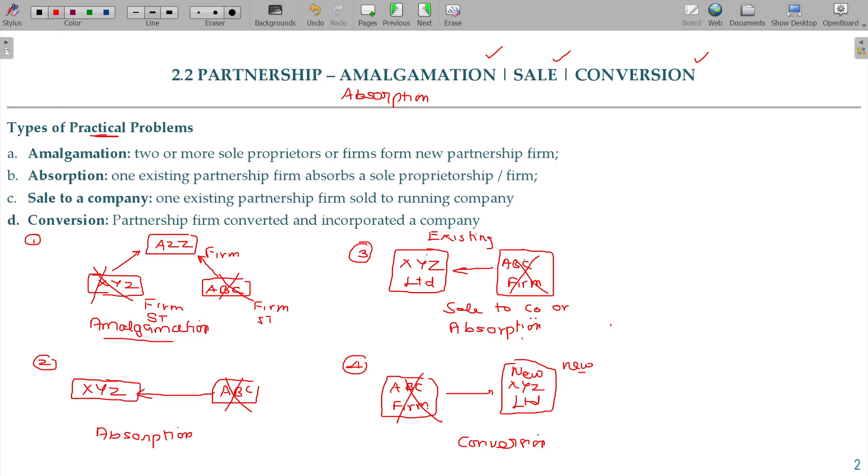Types of practical problems we are going to discuss. Amalgamation: two or more sole proprietors or firms form a new partnership firm. Absorption: one existing partnership firm absorbs either a sole trader or firm. XYZ takes over ABC. ABC can be a firm or sole trader.